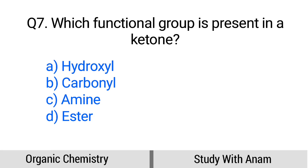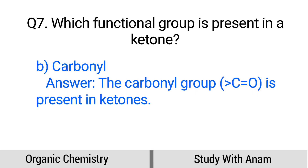Question number 7. Which functional group is present in a ketone? Option A: Hydroxyl, B: Carbonyl, C: Amine, D: Ester. The correct option is option B, Carbonyl. The carbonyl group (C=O) is present in ketones.